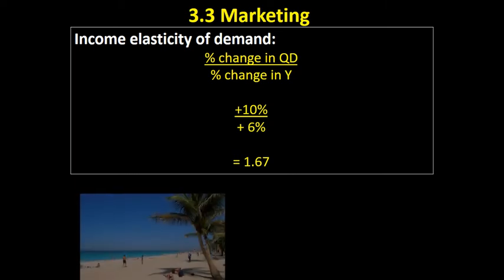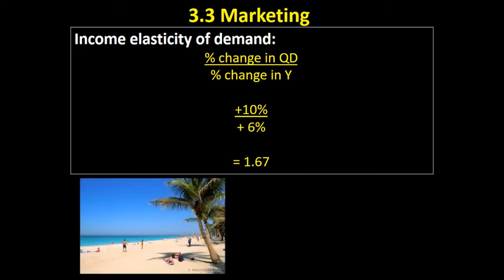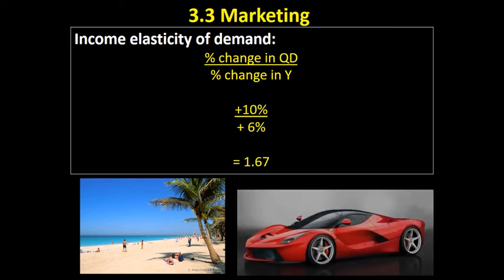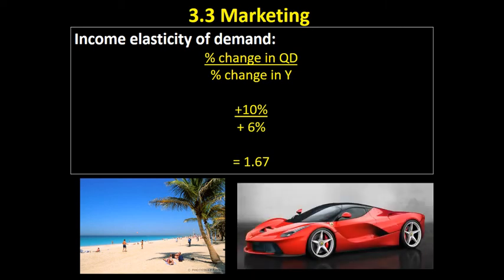A YED of 1.67 indicates a luxury product — like perhaps a foreign holiday or a sports car. These are goods for which, as people's incomes go up, they will be highly incentivised to spend their money on. Therefore there is a strong relationship between changes in income and changes in quantity demanded for these products.